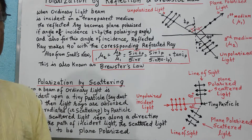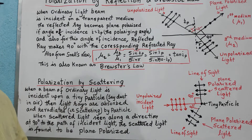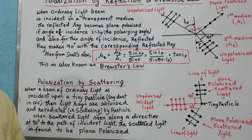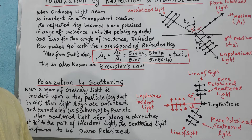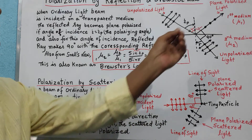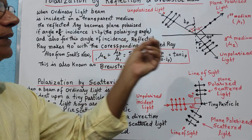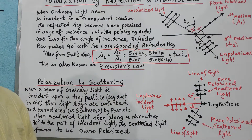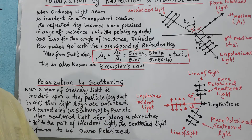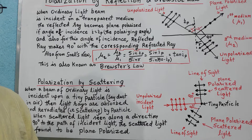Now let us talk about polarization produced due to scattering of light. Whenever light is incident on some tiny particle, it is absorbed and re-radiated. Apart from the phenomena of reflection and refraction, this third phenomenon occurs where light is absorbed and then re-radiated. This phenomenon is known as scattering of light.